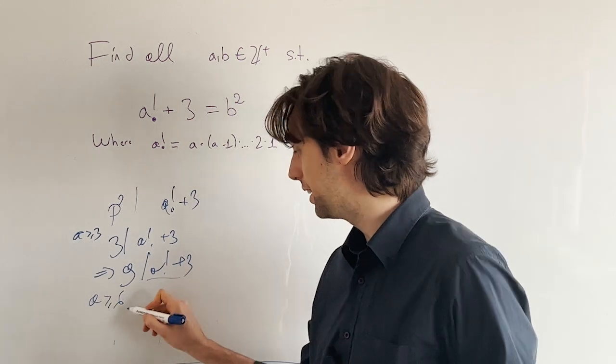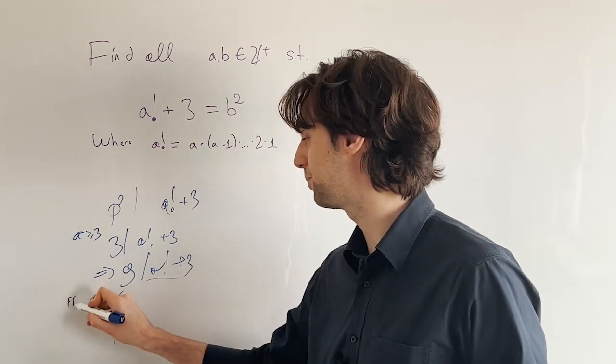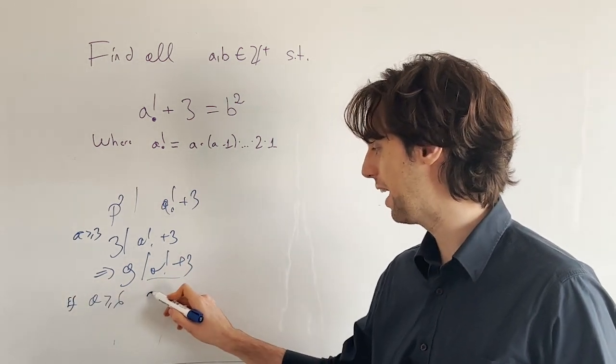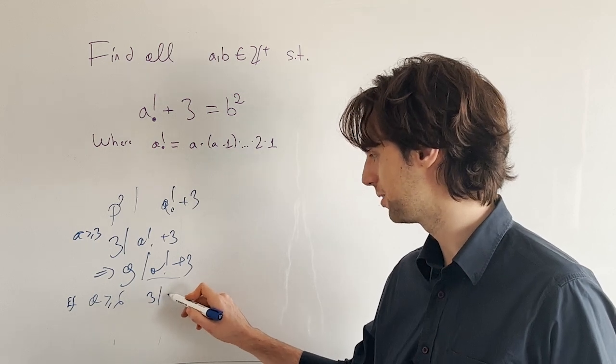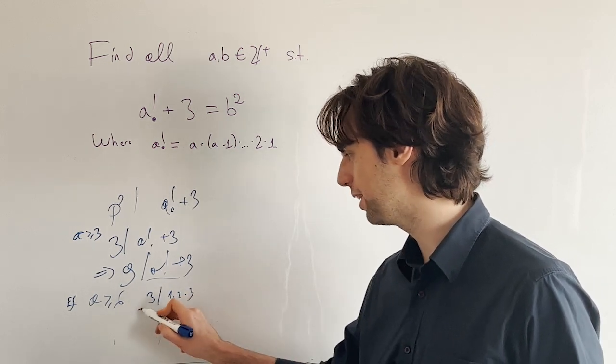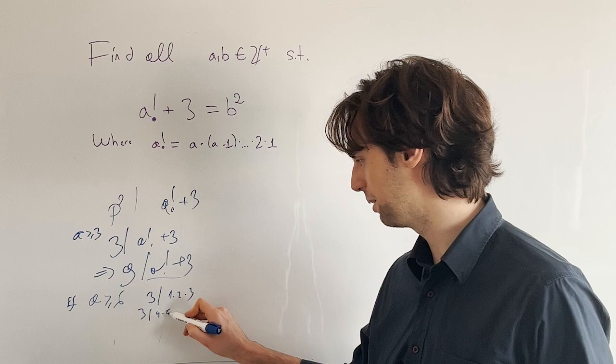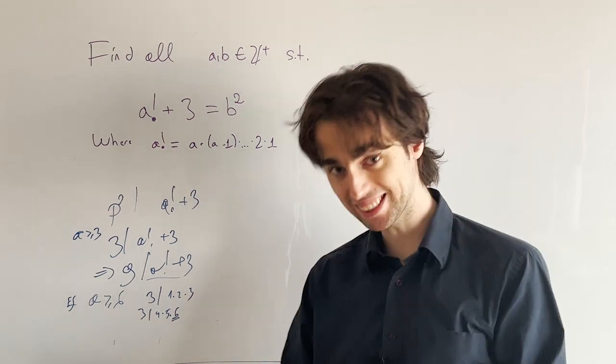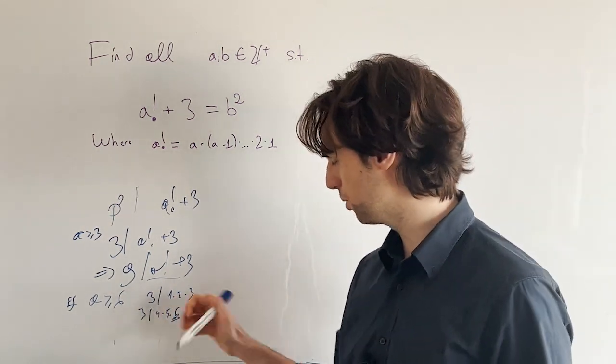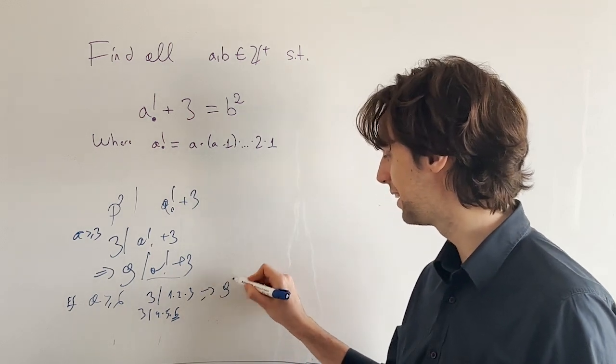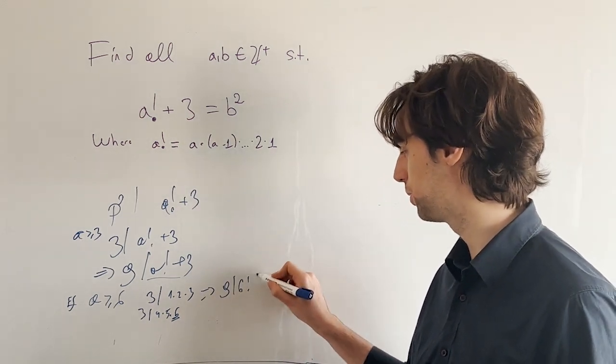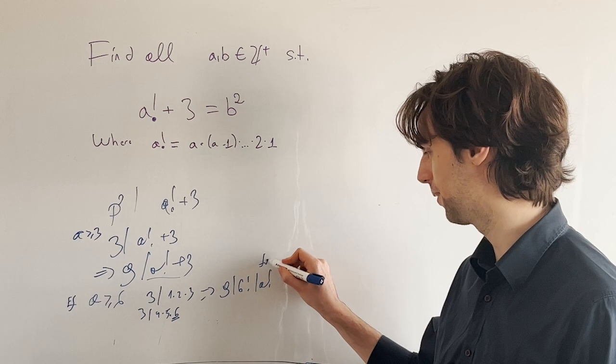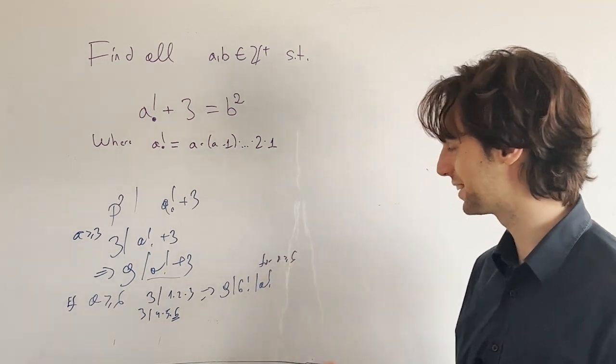The idea is if a is greater than or equal to 6, then we have 3 divides 1 times 2 times 3, and 3 divides 4 times 5 times 6. There's a 6, there's a 3. So in their product, so it means that 9 divides 6 factorial, which divides a factorial for a greater than or equal to 6.